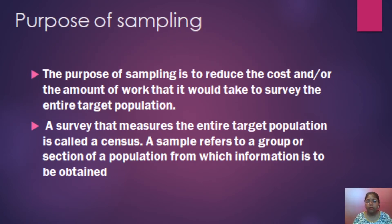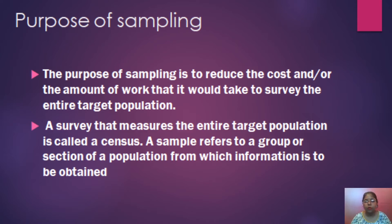The purpose of sampling is to reduce the cost or the amount of work that it would take to survey the entire target population. When the researcher doesn't have much money or time, they can do sampling. A survey that measures the entire target population is called a census. A sample refers to the group or selection of the population from which information is to be obtained. It needs very less resources and we can use different types of sampling survey methods discussed in previous lectures.